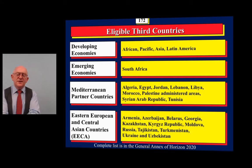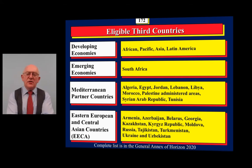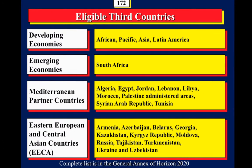Eligible third countries are defined in the general annex of Horizon 2020. In Annex A of the general annexes, every single country eligible for funding is listed. These can normally be categorized as developing countries in Africa, Asia, and Latin America. South Africa is classified as an emerging economy but can receive funding. Mediterranean countries, and places like Armenia and Ukraine, can also participate and receive funding.